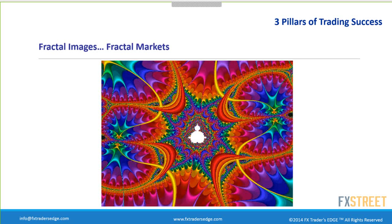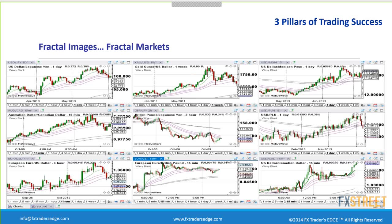Fractal images are generated using Fibonacci formulas. From a market perspective, once you train yourself to see the patterns, you'll see them repeated in any market in any time frame. We have nine different screenshots on screen — nine different markets including gold, dollar-yen, Aussie, euro, Canada — across daily, weekly, 15-minute, 2-hour, and 4-hour charts. Different markets, different time frames, yet the patterns are the same.